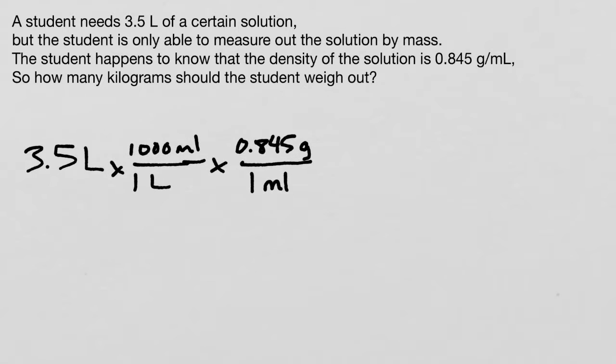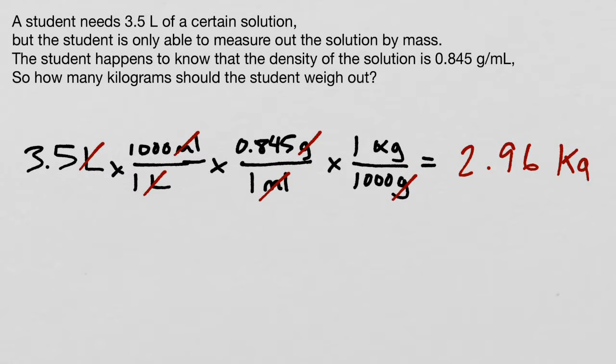Our problem states that we should see how many kilograms we need to weigh out, so we can simply do one more conversion: a thousand grams is one kilogram. We'll see here that our liters will cancel, milliliters and grams cancel, and the answer is 2.96 kilograms, or 3.0 if you want to use the right number of sig figs.